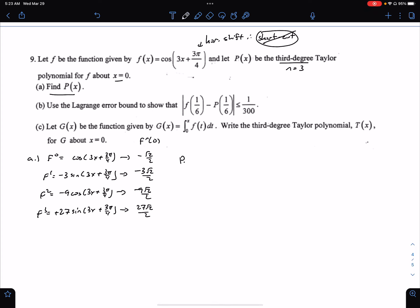So our third-degree Taylor polynomial, P₃(x), is going to become our first term, negative √2/2 minus 3√2/2 x minus 9√2/2 times 2 factorial x squared. Don't forget this comes from Taylor, and then the last one plus 27√2/2·3! x³. And there it is right there. Very easy to do.